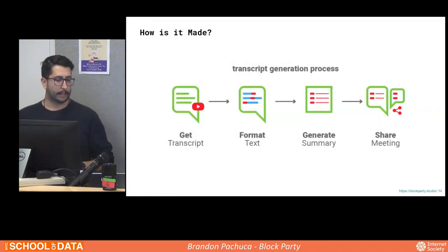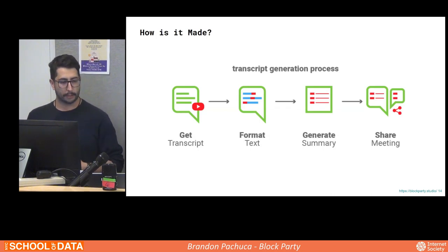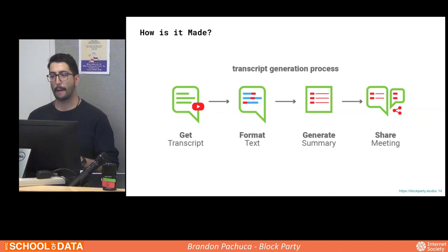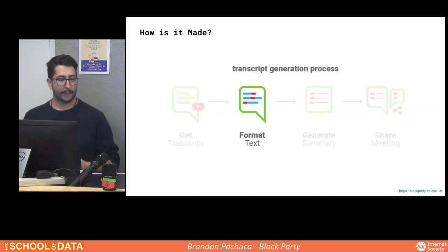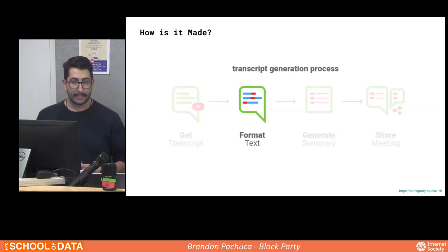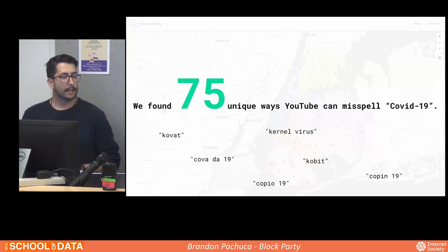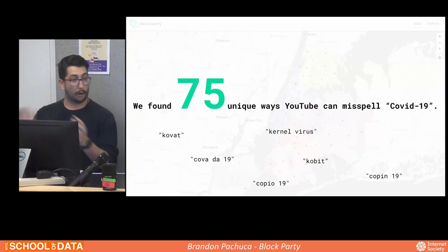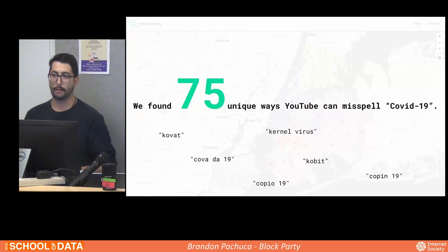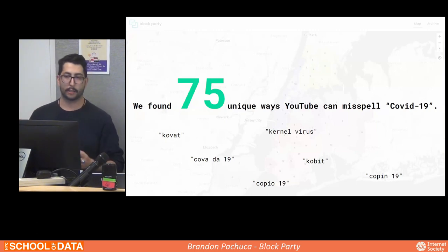Starting in March of 2020, community boards and other agencies began publishing their meetings on YouTube for public accessibility. Block Party grabs those videos off YouTube — specifically the closed captioning information — and creates transcripts from them. We format the information to be more human-readable. For example, we found 75 different ways YouTube can misspell the word COVID-19. We grab that raw data with all its misspellings, grammar and punctuation errors, and fix those errors to put it into a complete human-readable transcript.